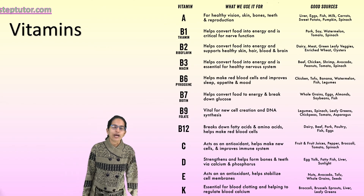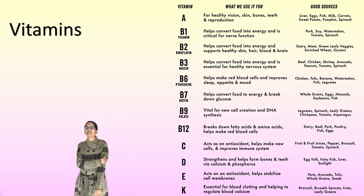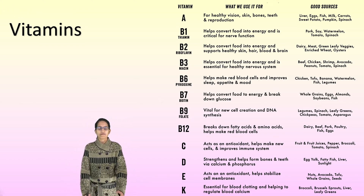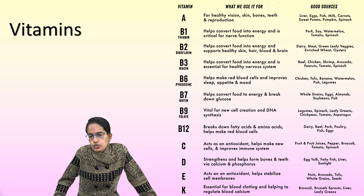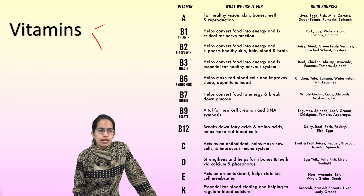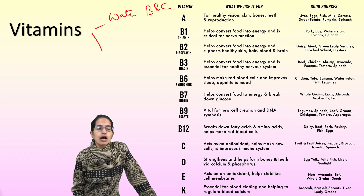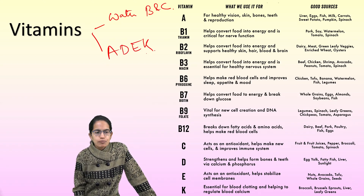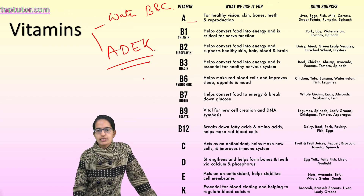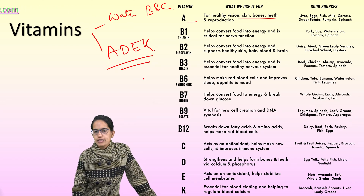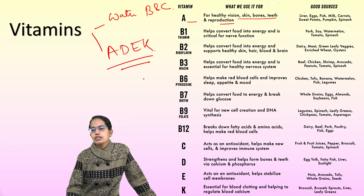The next topic is vitamins and minerals, considered as protective and regulative food. Vitamins are classified as water-soluble and fat-soluble. Water-soluble vitamins are B and C. Fat-soluble vitamins are A, D, E, and K. Vitamin A is required for healthy vision, skin, bone, and teeth.